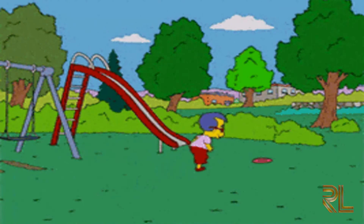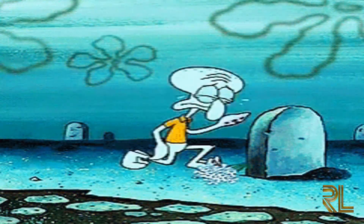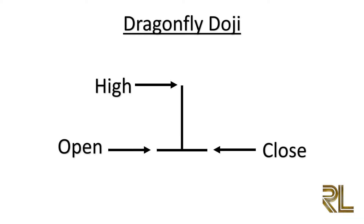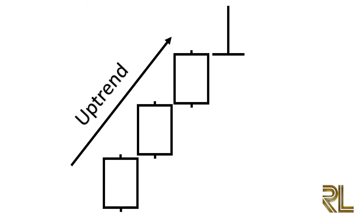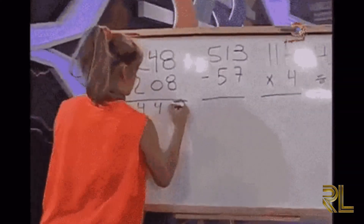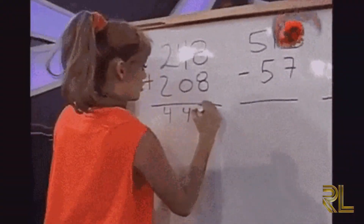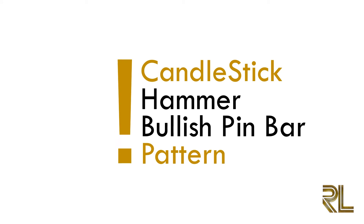The gravestone doji is the bearish version of the dragonfly doji, also part of the doji family. It is formed when the open and close are the same or about the same price. It's found in a preceding uptrend and looks like an inverted T-letter with little to no real body. The psychology: the bulls push price all the way up, then the bears pull it back to where it opened. This pattern indicates that buyers are no longer in control. For reliability, it must occur near a resistance or supply level.